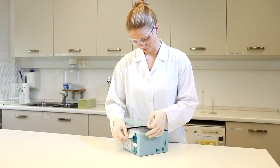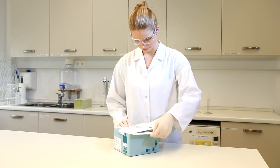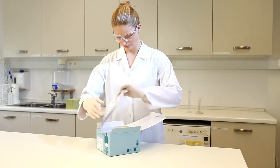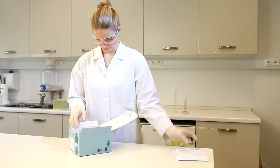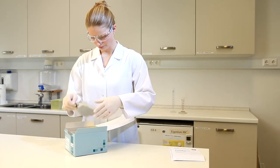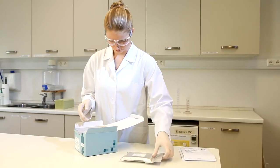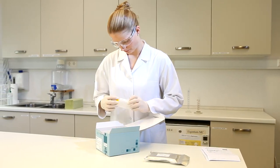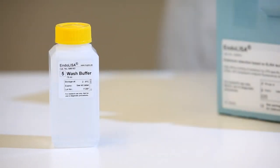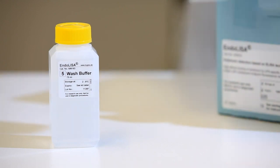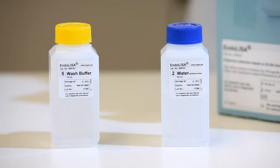Each Endolysa kit contains reagents for 192 tests. The reagents are: Endolysa plates precoated with phage binding protein, wash buffer, endotoxin free water, endotoxin standard, assay buffer, enzyme recombinant factor C, substrate, binding buffer, and cover foils.